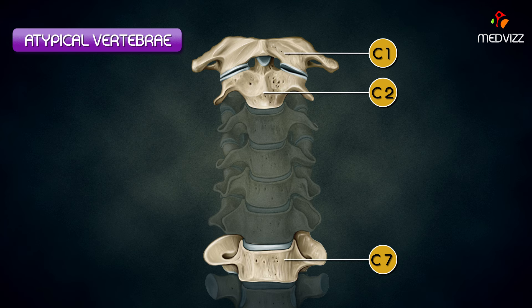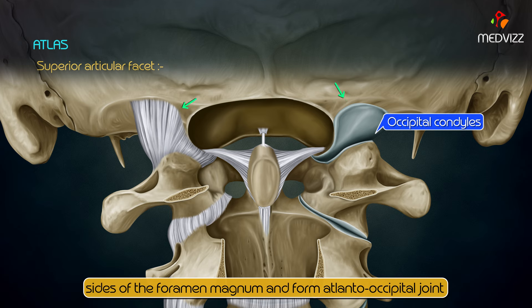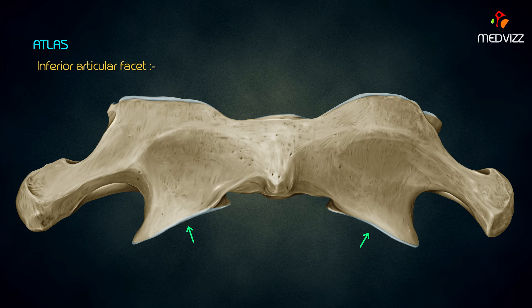The lateral masses serve in place of a body by bearing the weight of the globe-like cranium. Each lateral mass shows a superior articular facet on its upper surface, directed upwards and medially. The kidney-shaped concave superior articular surfaces articulate with the two large occipital condyles at the sides of the foramen magnum, forming the atlanto-occipital joint.